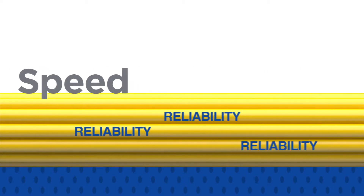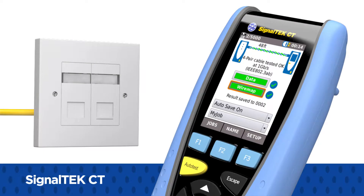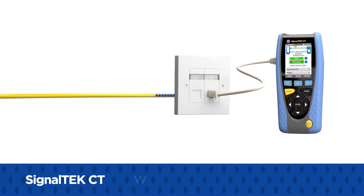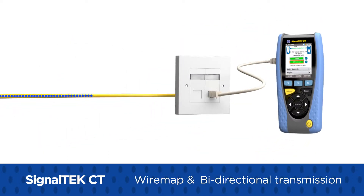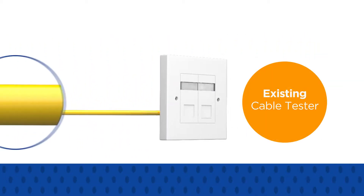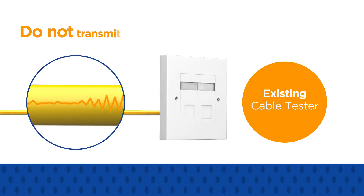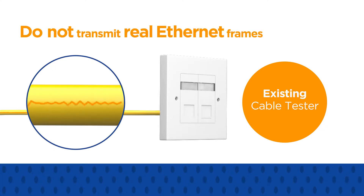How can you prove the speed and reliability of your data cable installation? The SignalTex CT quickly tests both wire map and bi-directional transmission performance of data cable. Existing cable testers often do a poor job of simulating network traffic because they do not transmit real Ethernet frames.